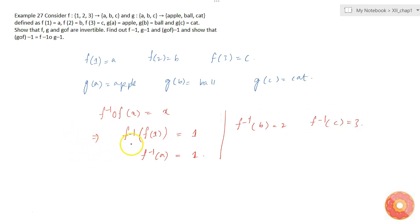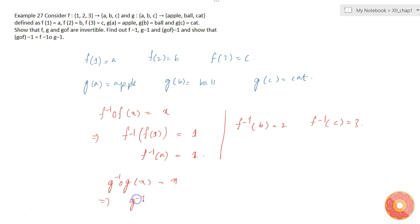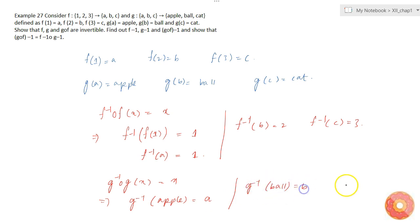Now let's find g inverse. Since g⁻¹(g(x)) must equal x, we get g⁻¹(apple) = a, g⁻¹(ball) = b, and g⁻¹(cat) = c.